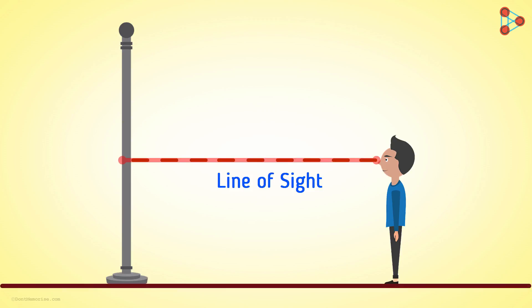Since this line is parallel to the surface, we call it the horizontal line of sight or simply a horizontal line.